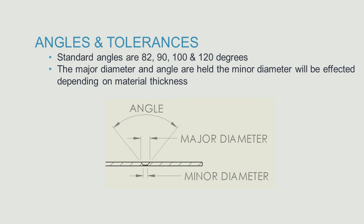When fabricators place countersinks in sheet metal parts, the major diameter, or the surface diameter, and the angle are held to tight tolerances. The minor diameter, or through hole, can be affected by the material thickness and its geometrical restraints.